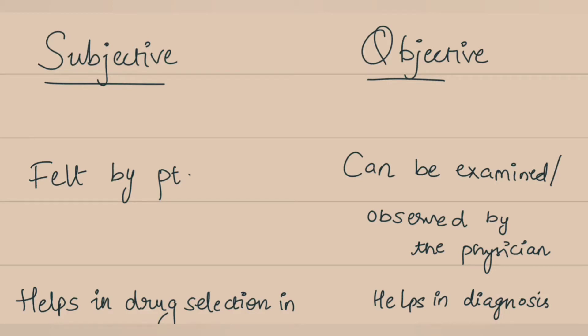Something which can be seen, felt, observed, or touched can be called an objective symptom because it can be examined and observed by the physician.